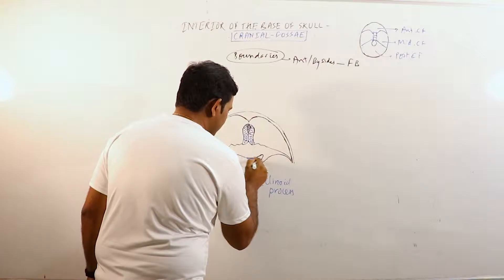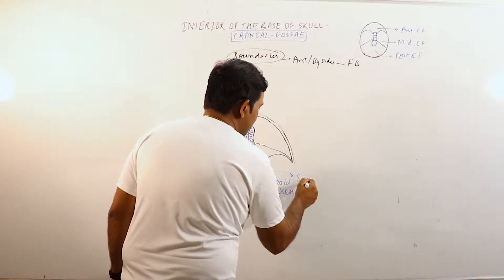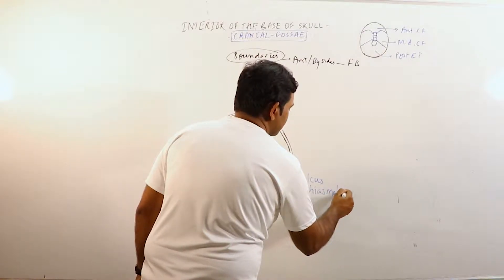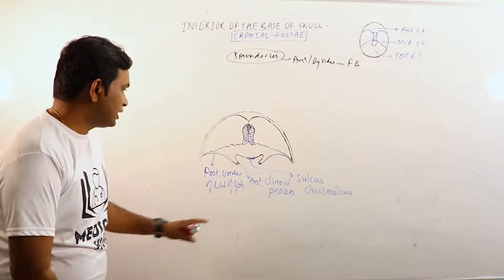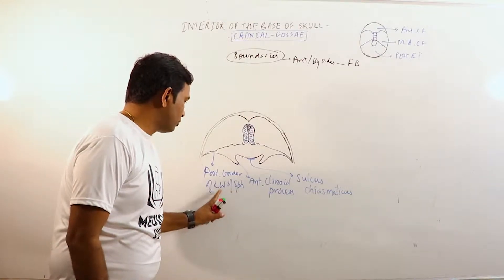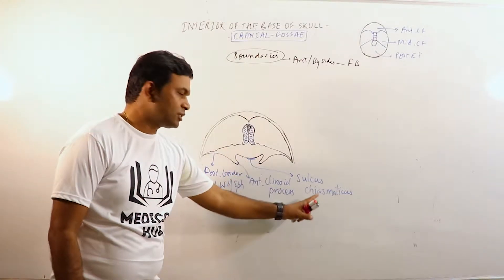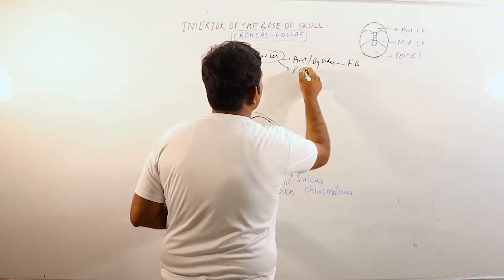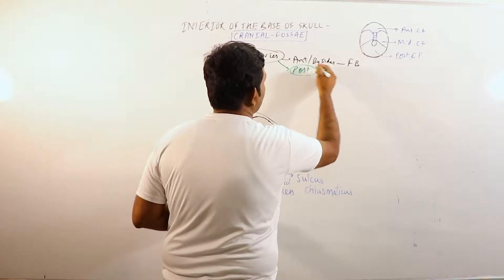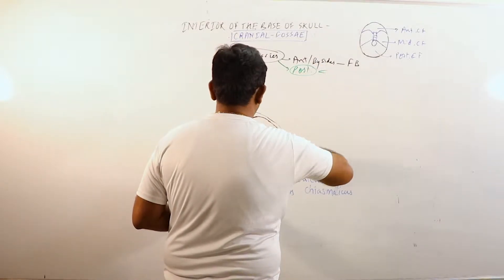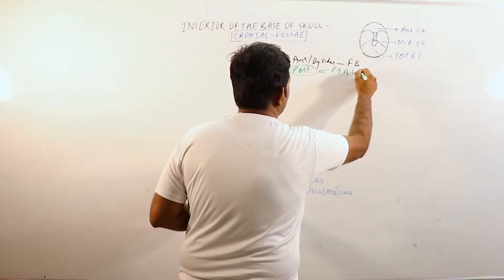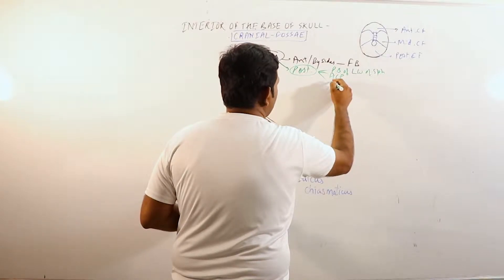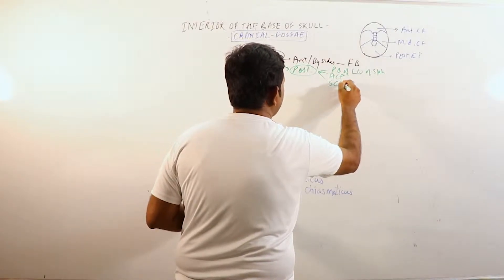And this structure is the sulcus chiasmaticus. So these three structures — the posterior border of the lesser wing of the sphenoid, the anterior clinoid process, and the sulcus chiasmaticus — form the posterior boundary of the anterior cranial fossa.